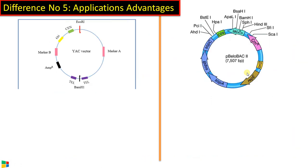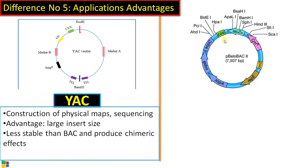And finally, difference number five, applications and advantages. In the case of YAC vector, it is used for the construction of physical maps and sequencing of different genomes. Both YAC and BAC vectors are widely used. The major advantage of YAC vector is the insert size. It can accommodate up to 3000 KB.